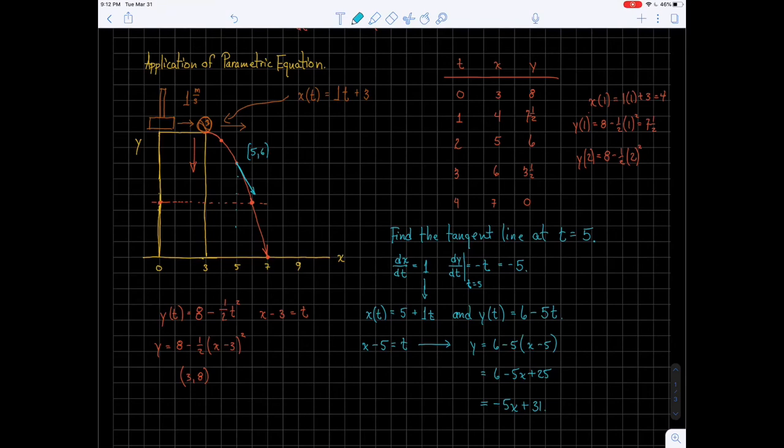And what I would encourage you to do is you should double check by taking the derivative of this equation here. And you should find, if you do that at t equals 5, you should come up with a slope of negative 5. And that's how we can also find the tangent line of our parametric equation at any given point.